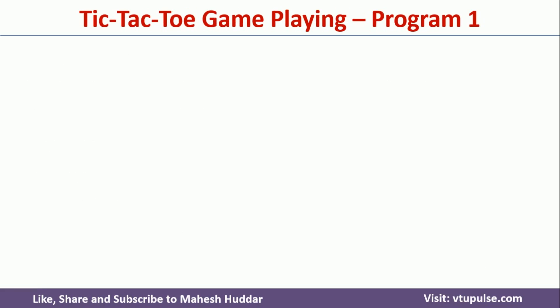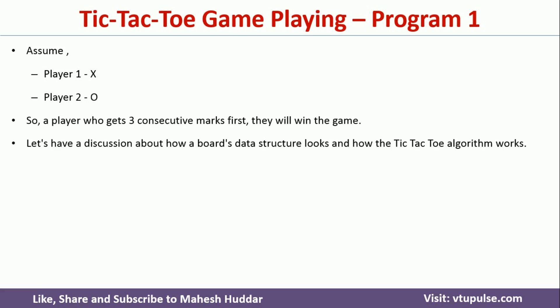I will start with Program 1. Let us assume there are two players: the first player uses the X mark and the second player uses the O mark. The one who places three consecutive marks in a horizontal, vertical, or diagonal line is the winner. To understand Program 1, we first need to understand its data structure.